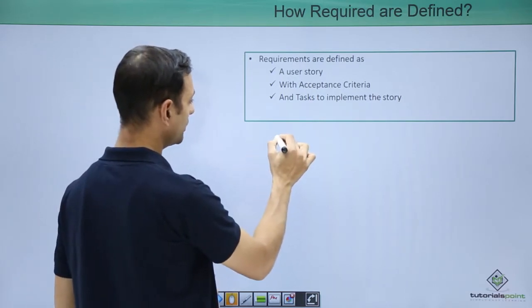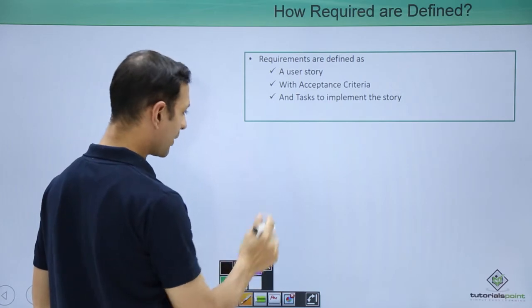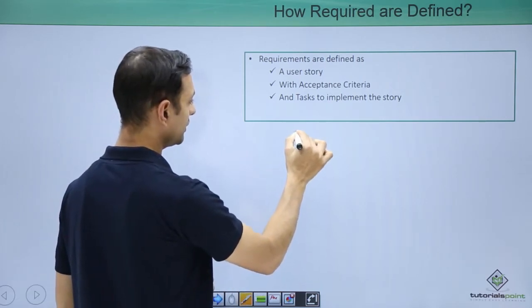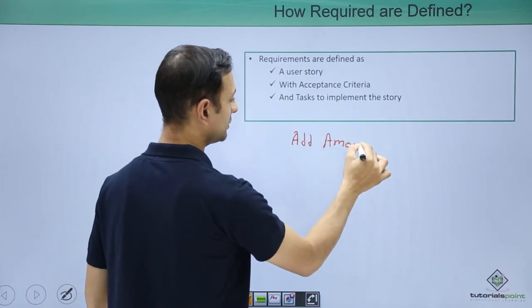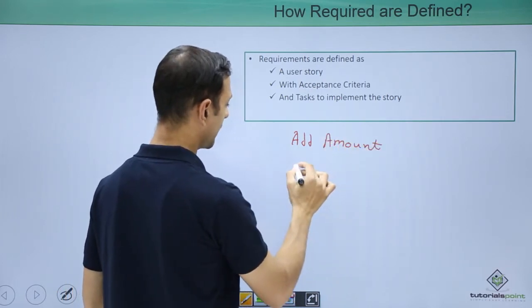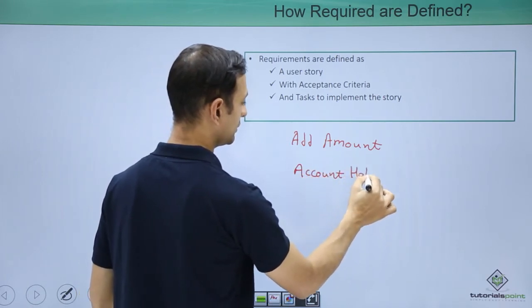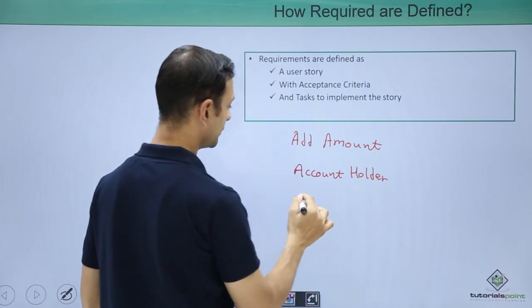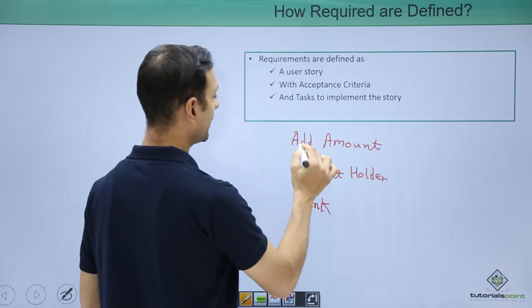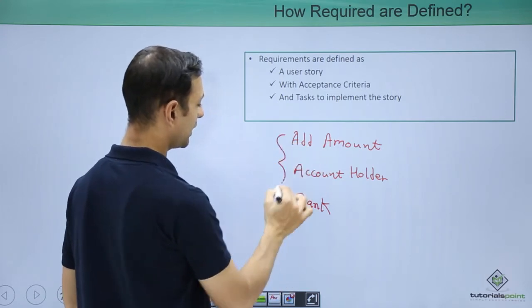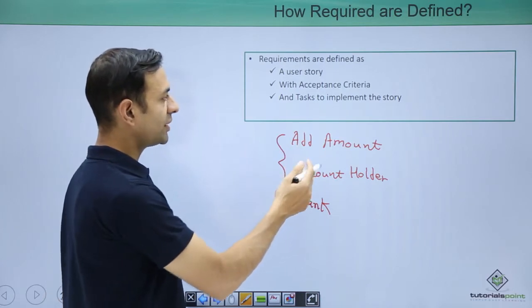Like a client says, 'Add amount - I should be an account holder and I should go to a bank.' So this is the requirement - a blunt statement. To convert this statement into a user story with acceptance criteria, I need to create a business-understandable statement.